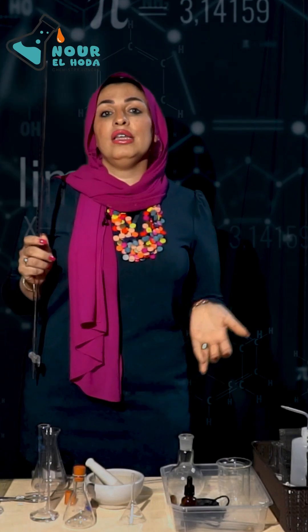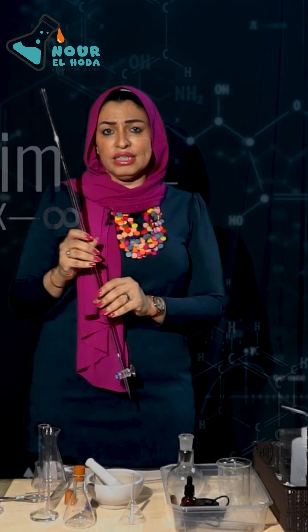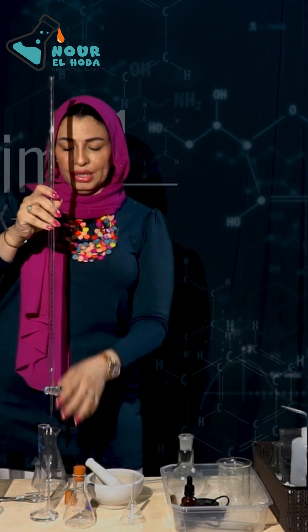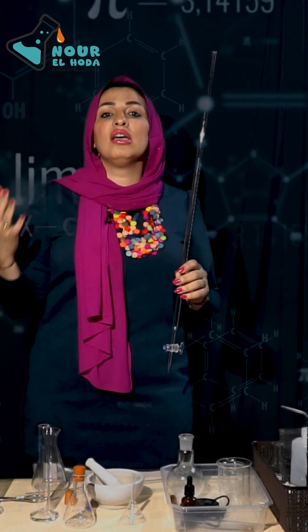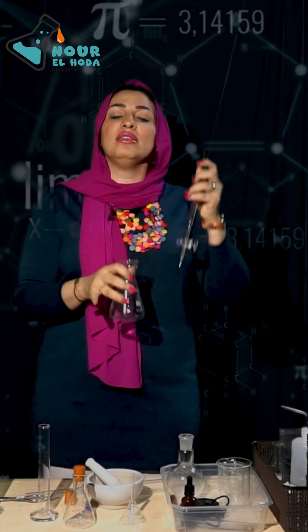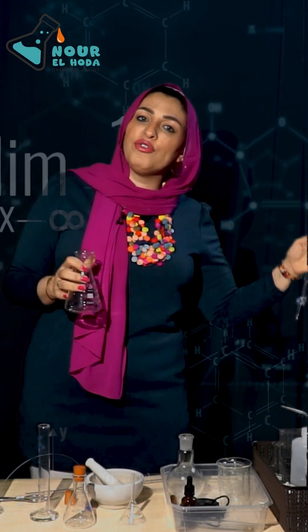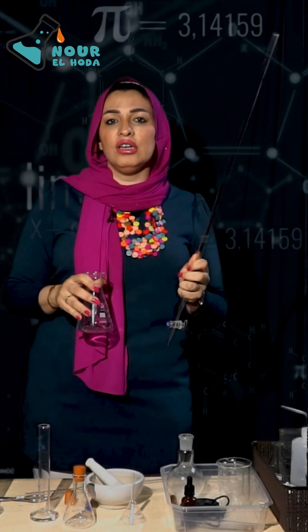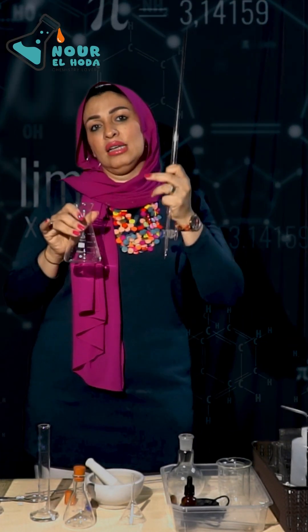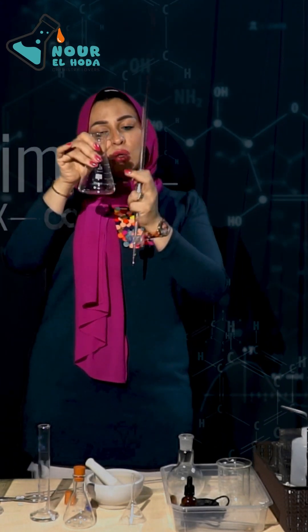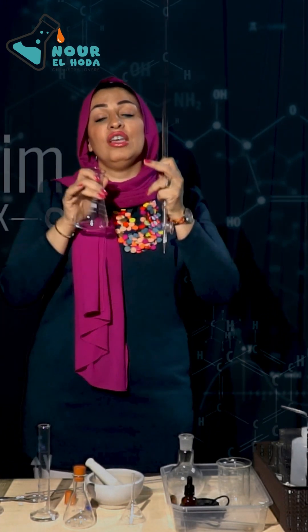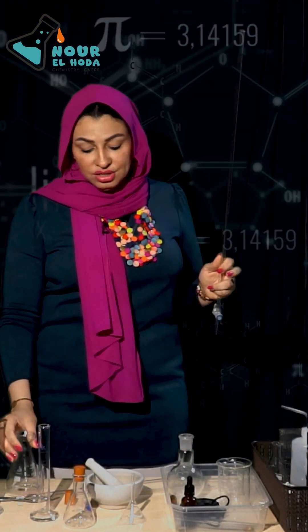We never use universal indicator in titration because it has a wide range of colors, making the endpoint very hard to detect. Use methyl orange or phenolphthalein instead. For color changes: if there is acid in the flask with phenolphthalein, it changes from colorless to pink. With methyl orange, it changes from orange to yellow. Always think about what is in the flask.